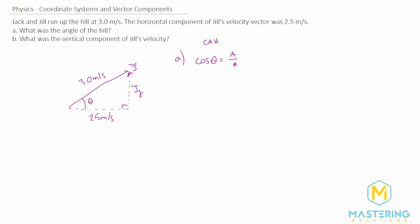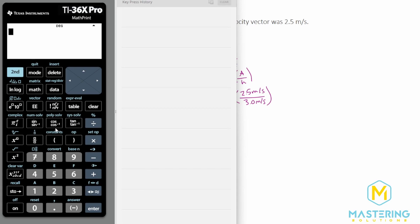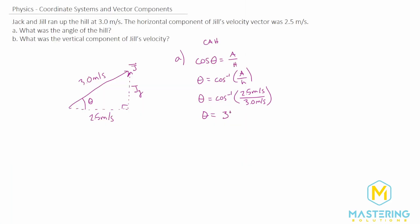We want to solve for the angle, so we'll take the inverse cosine of both sides. So theta will be equal to inverse cosine of adjacent over hypotenuse. So theta will be equal to inverse cosine of the adjacent, which is 2.5 meters per second, divided by the hypotenuse, which is 3 meters per second. So let's get our calculator. We have the inverse cosine of 2.5 divided by 3 gives us an angle of 33.6. So we'll round that to 34 degrees.